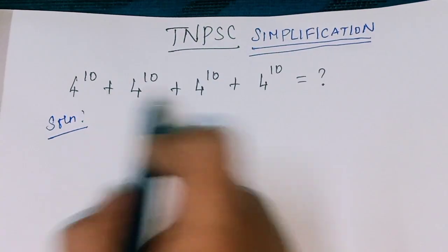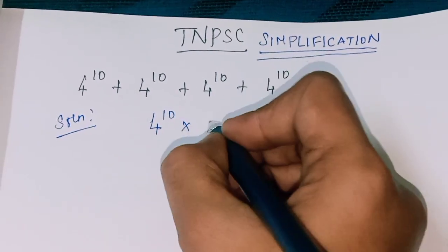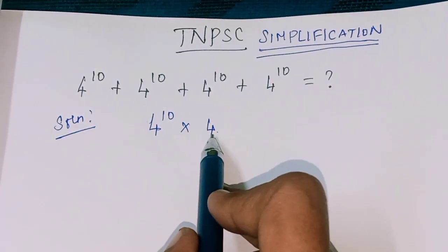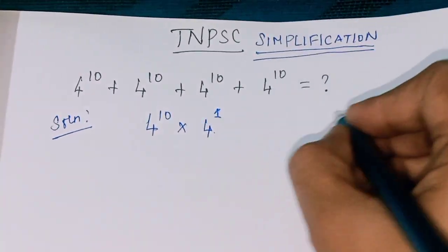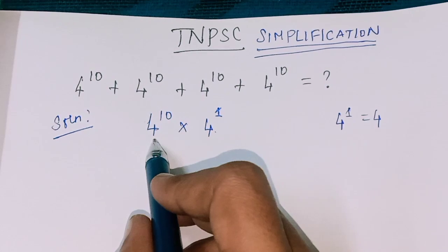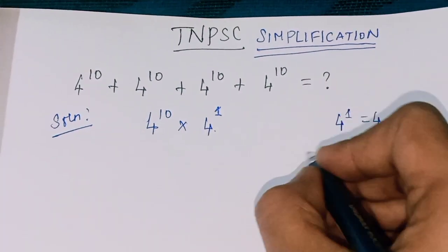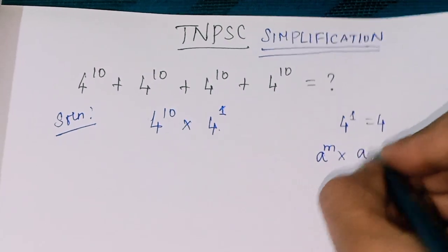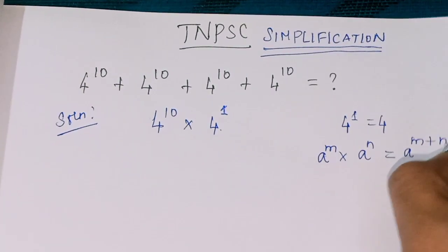Solution: 4 power 10 appears 4 times, so that is 4 power 10 into 4, which is 4 power 10 into 4 power 1. Using the rule: A power M into A power N equal to A power M plus N.